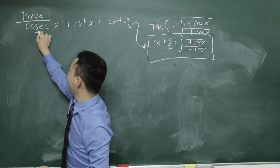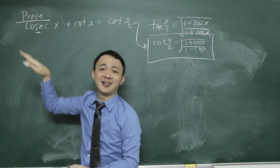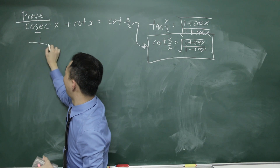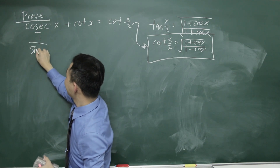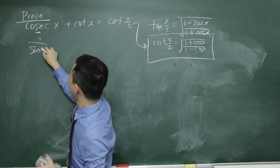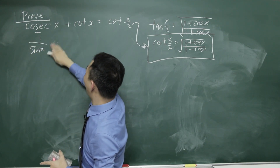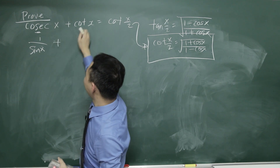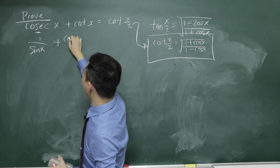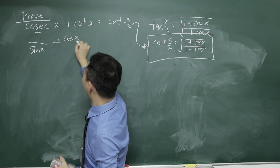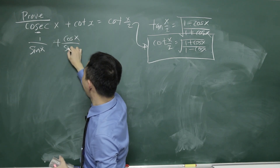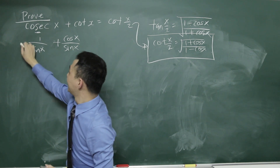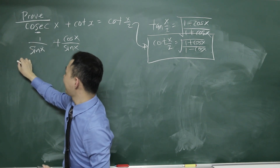For cosecant — you see the third letter is s — that means it's 1 over sine x. And we know cotangent x equals cos x over sine x. This is the first step.